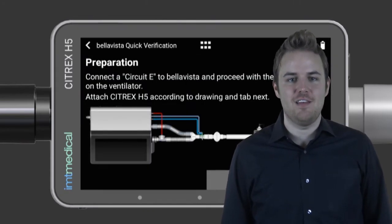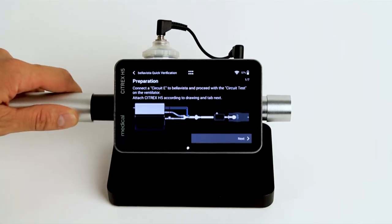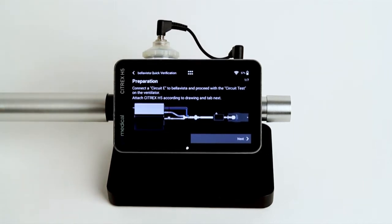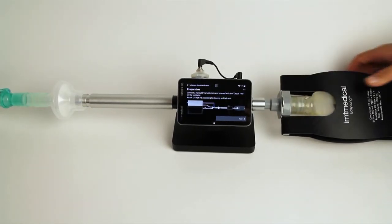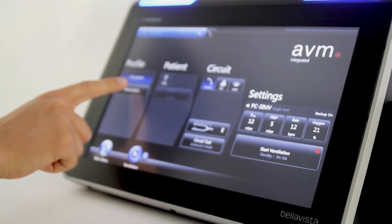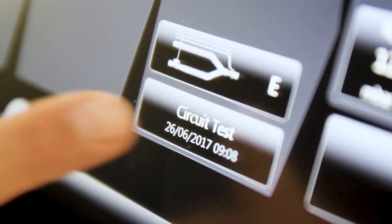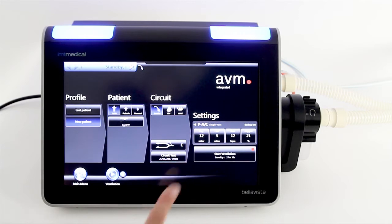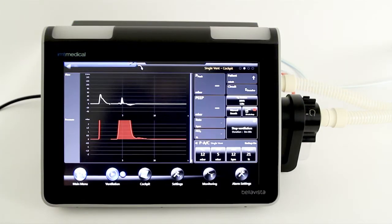Connect a Bella Vista ventilator to the Citrix H5 gas flow analyzer according to the diagram. Ensure that a successful patient circuit test has been performed before. Now start ventilation with default settings and wait for at least 10 breaths to be applied to the system.